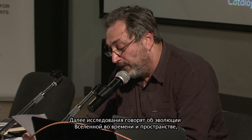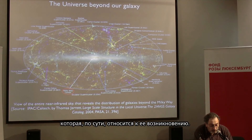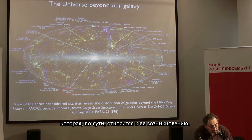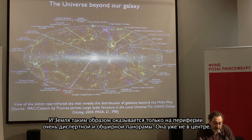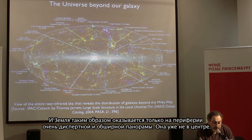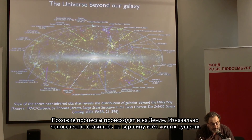In 1927, Le Maître proposed the Big Bang theory. Recent studies have shaped a vast Universe evolving in space and time that can be traced almost until its origin. To this relativization process outside Earth — that moves Earth from the center of the Universe to a periphery of a dispersed vast panorama — corresponds a similar process inside Earth.